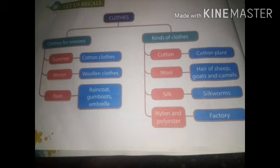Kinds of clothes: cotton, wool, silk, nylon and polyester. Cotton comes from the cotton plant. Wool comes from the hair of sheep, goats and camels. Silk comes from silkworms. Nylon and polyester are made in factories.